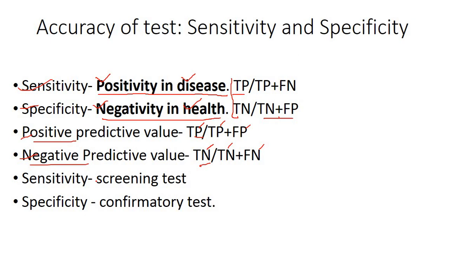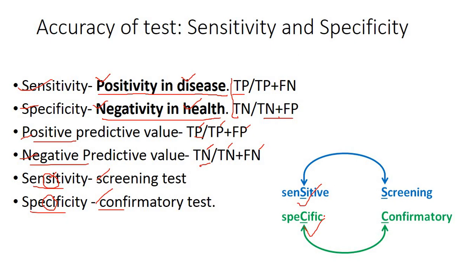When a test has good sensitivity, we use it as a screening test; when it has good specificity, we use it as a confirmatory test. For example, HIV ELISA is a good screening test due to high sensitivity, while Western blot is a confirmatory test due to high specificity. The mnemonic is the fourth letter: Sensitivity for Screening, Specificity for confirmatory.